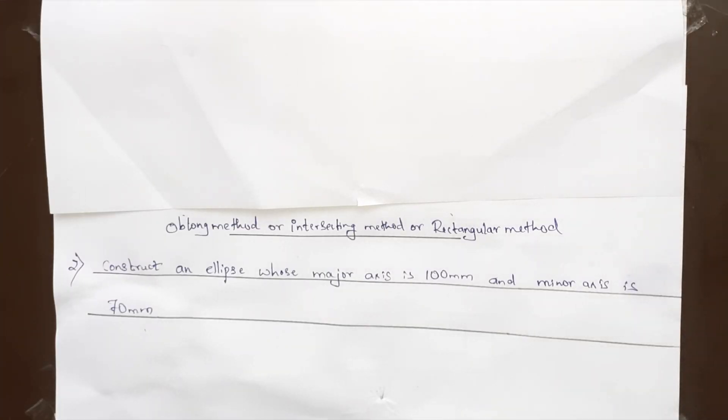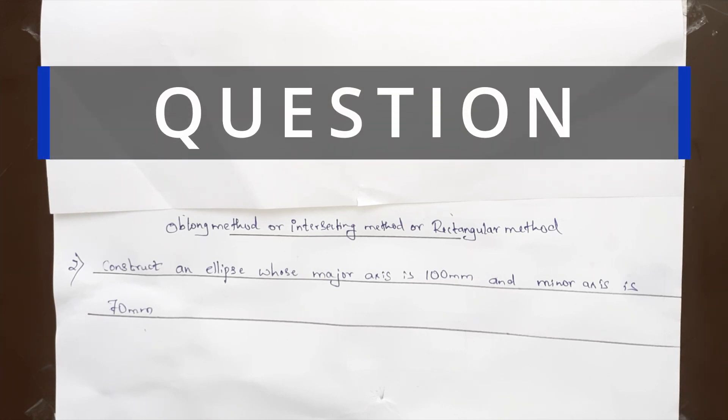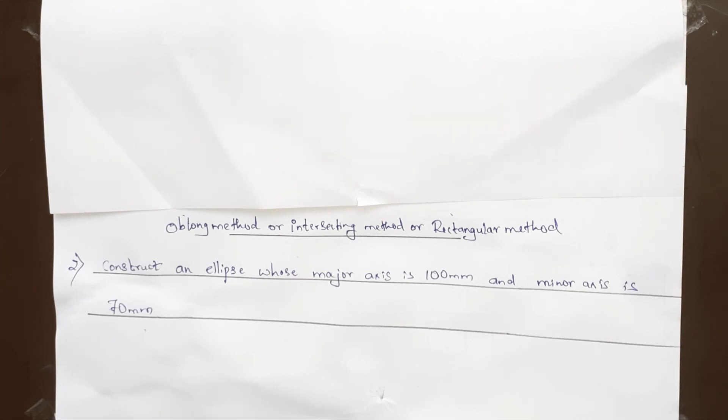So let's read the question. Construct an ellipse whose major axis is 100 mm and minor axis is 70 mm.